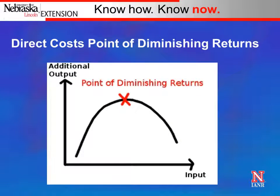As we think about direct costs, there's a point of diminishing returns — we can't keep adding inputs and expect the same output. A good example is a hay meadow: we get increased production per unit of fertilizer, but as we add additional units we get less and less grass response. There comes a point where the cost of additional fertilizer equals or exceeds the value of the forage produced. Somewhere to the left of that diminishing-returns point is where there's no economic value in additional inputs, and we need to think about that with the cow herd.